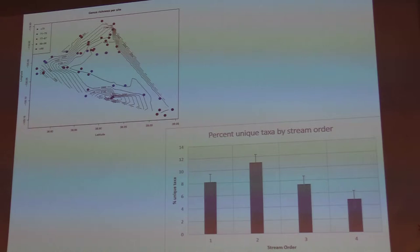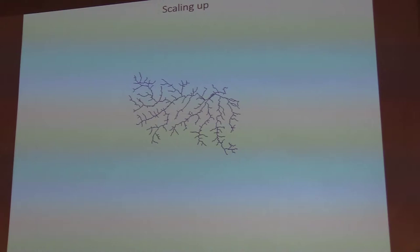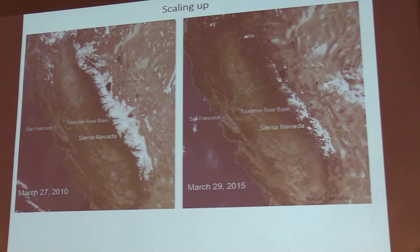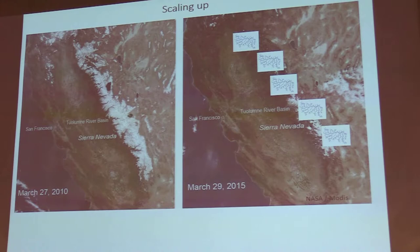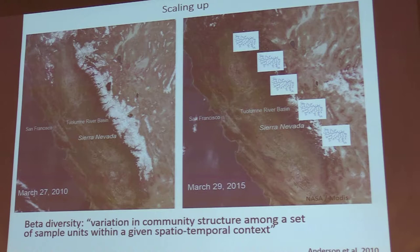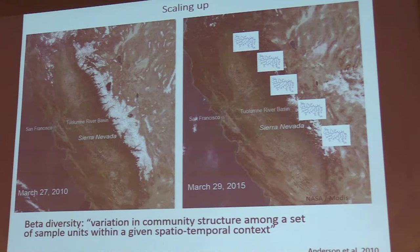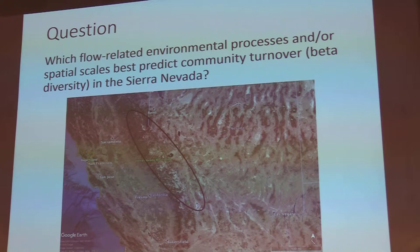To get at that, I like to scale up and look at whole catchments. There's a striking image of shifts in snowpack across the Sierra Nevada, and I want to understand what's happening at different catchments throughout the range — analyzing relationships between beta diversity, flow perturbations, and other environmental variables at larger spatial scales. Beta diversity here is defined as variation in community structure among sample units within a given spatial-temporal context.